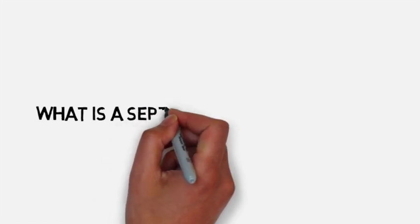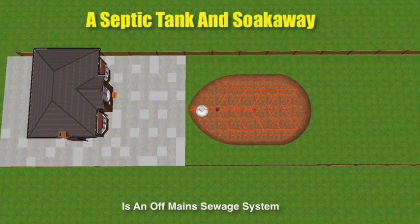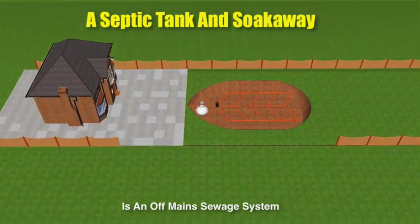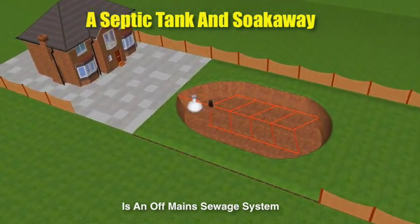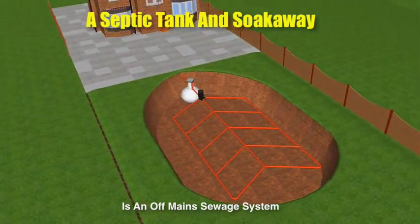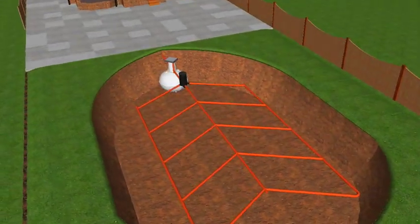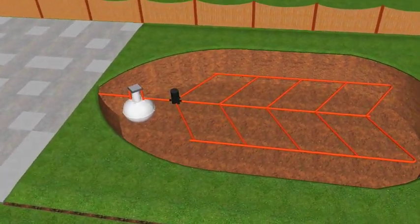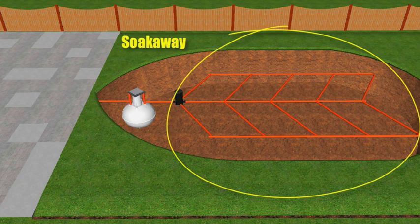So, what is a septic tank and soak away? A septic tank and soak away is an off-main sewage system, designed for properties that are not connected to the mains drainage. This kind of sewage system normally comprises of two main components: number one, the septic tank, and number two, the soak away.